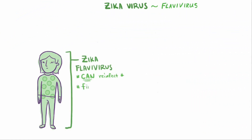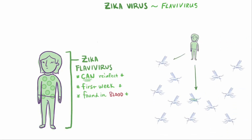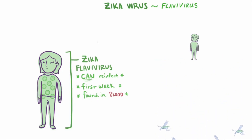This window lasts for the first week of infection, during which the Zika virus can be found in the blood. So if humans with the disease can transmit back to mosquitoes, then you can imagine that areas where there are a lot of mosquitoes would be set up for spreading the virus super quickly.